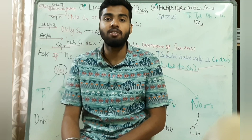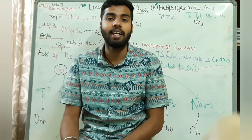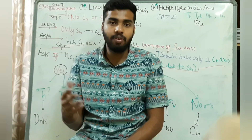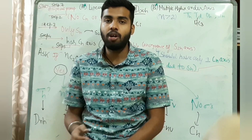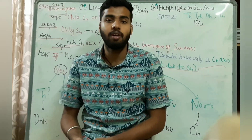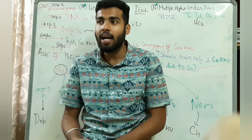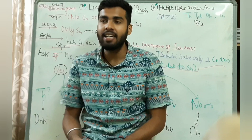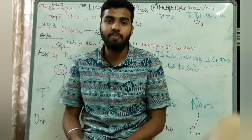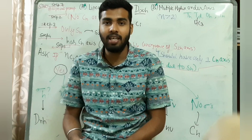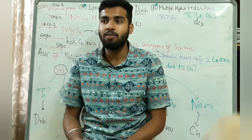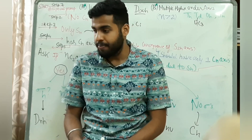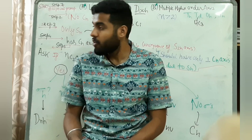A lot can be found from a character table. Character tables are made out of different point groups, and that point group we are going to learn today. It helps you get dipole moment, IR, Raman, and a lot of spectroscopic things, and it also helps you determine properties of a molecule.